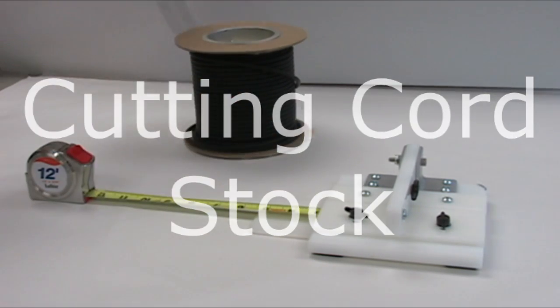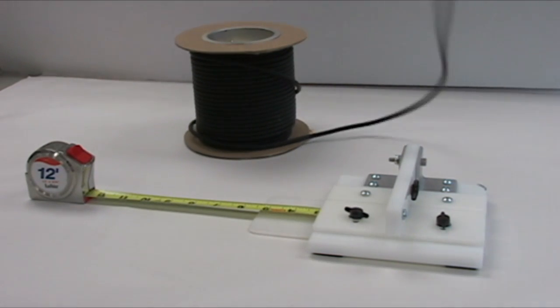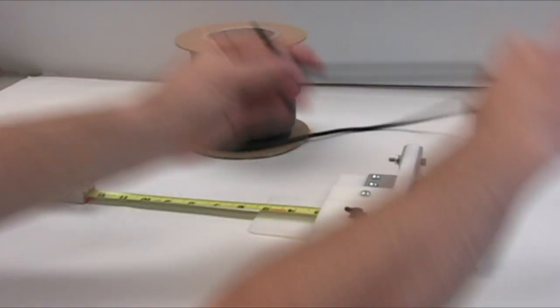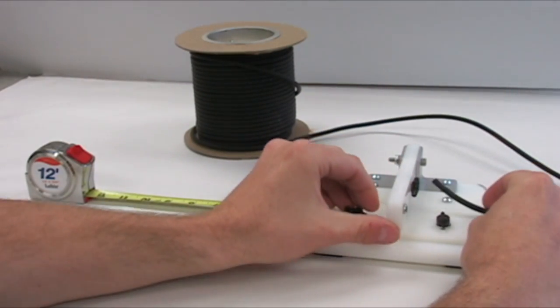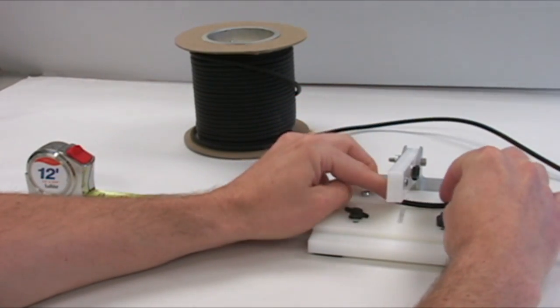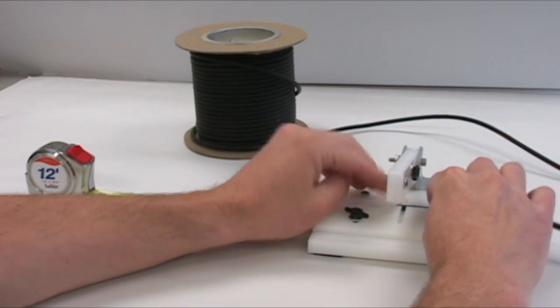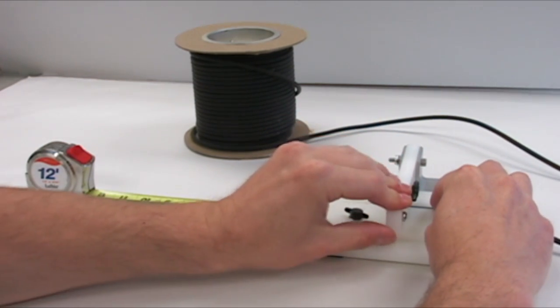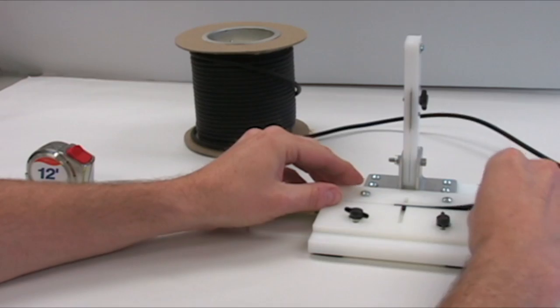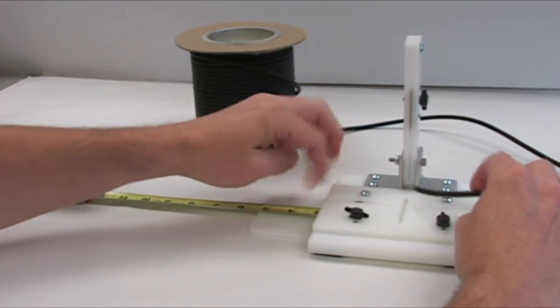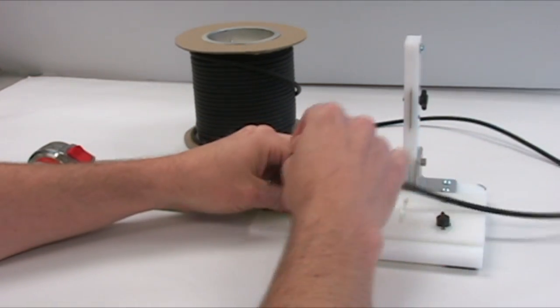Cut some cord stock. I'm going to unravel it and we'll need to trim off the beginning of it. Make sure it's a tight 90 degree cut, get it out.